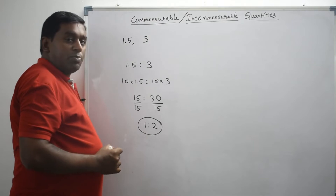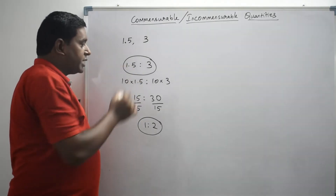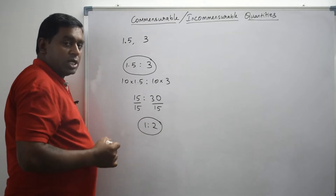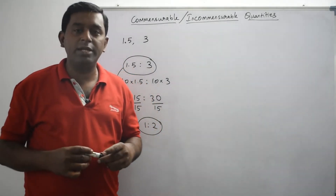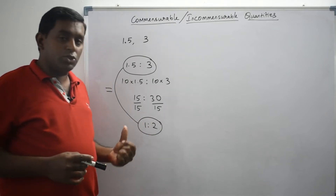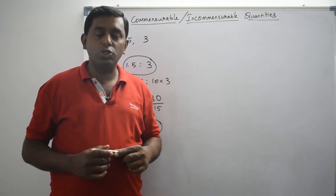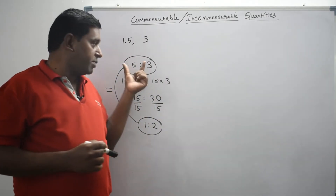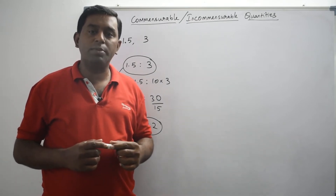One important thing to notice: when I took the ratio of 1.5 and 3, I got 1.5 is to 3. To make 1.5 an integer, I multiplied both terms by 10 and got 1 is to 2. Because I used multiplication — multiplying both terms of the ratio by the same number — the given ratio 1.5 is to 3 and the final ratio 1 is to 2 are equal. That is why we are allowed to use only multiplication or division, not any other operation.